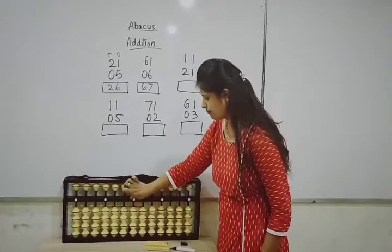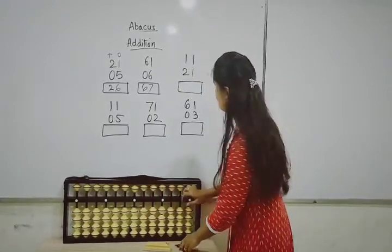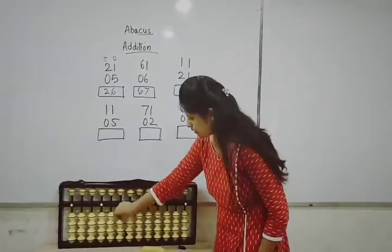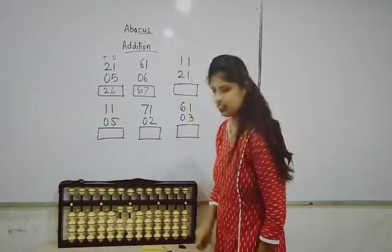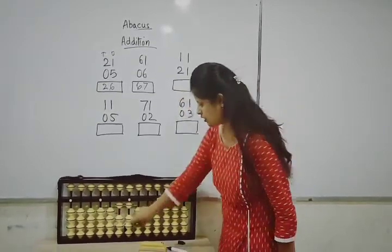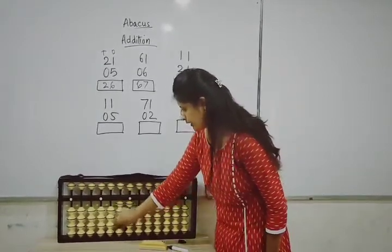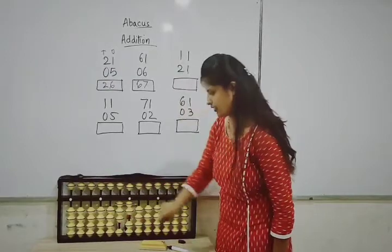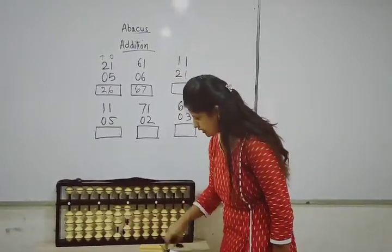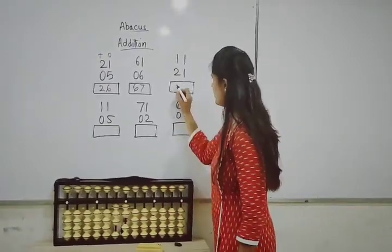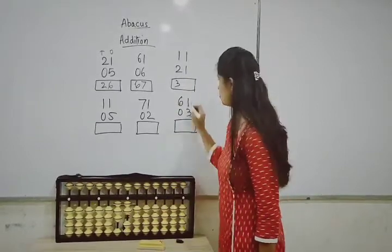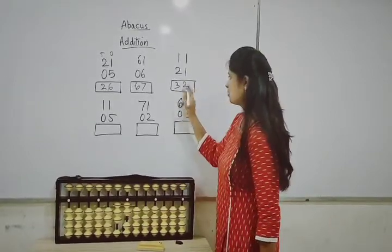One more time: 11. So show 1 in 1s place and 1 in 10s place. Then add 21: 2 in 10s and 1 in 1s. Now count the 10s place: 1, 2, 3 — so 3 there, that is 30. And 1s place: 1, 2 — that means 2. So the answer is 32.